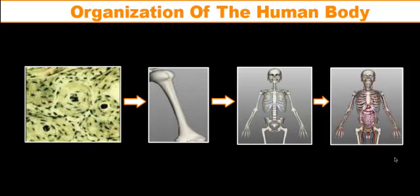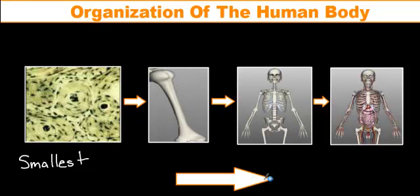Here we have four diagrams illustrating the different levels of organization inside of the human body. We're going to start off from the smallest level of organization and move all the way to the largest level of organization. So the first level of organization is going to be the cell.